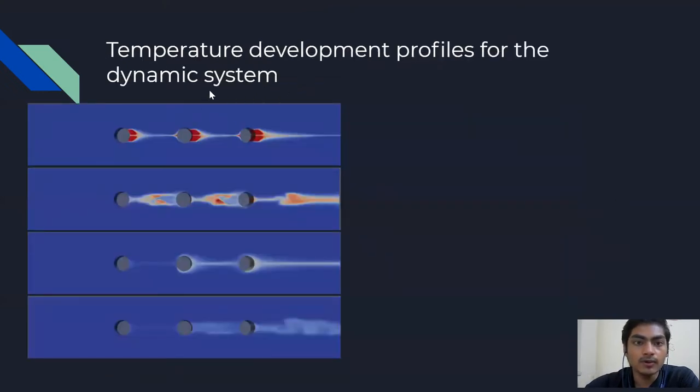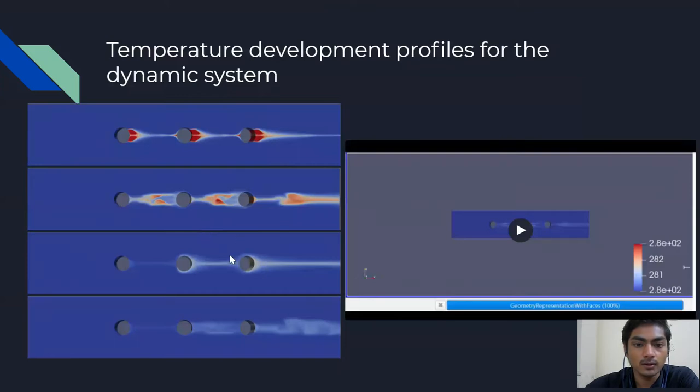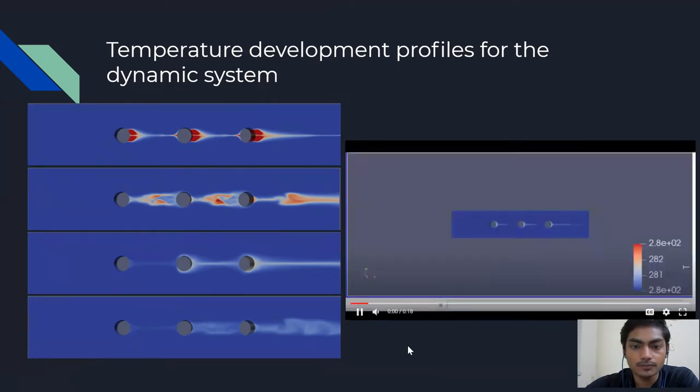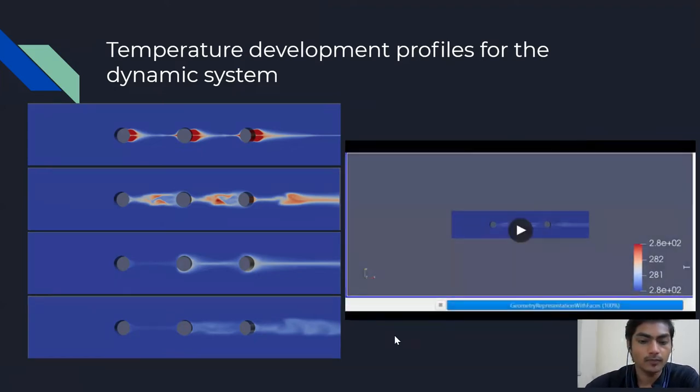Next, the temperature profile for the dynamic system is as shown in this video. Also, the dynamic system is at its steady state. Now, we will see a video in which we will see how the profile varies with time. Here, as we might expect, the higher temperature is seen around the heat flux sources and it lowers down subsequently until it again gains heat from the heat sources. This is the temperature profile for our dynamic system.